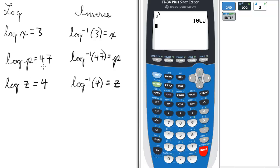The next example: log p equals 47. In inverse form, it would be inverse log of 47 equals p. We repeat the process: second, then log for the inverse form of the log.